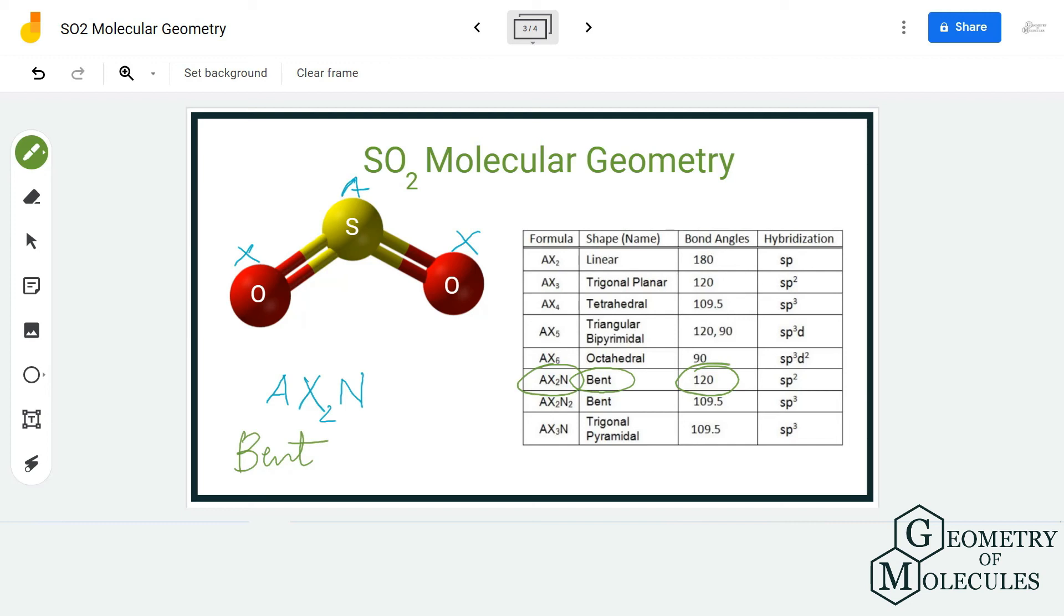You can probably see here that because it is not linear, it is obviously less than 180 degrees, and hence the shape is bent. I hope this video helps you to understand the molecular geometry of SO2 molecule.